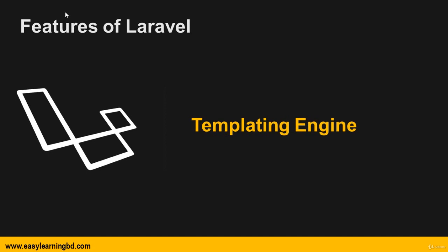Template engine: Laravel comes with a built-in template engine known as the Blade template engine. Blade combines one or more templates with the data model to produce resulting views by transferring templates into cached PHP code for improved performance. Then testing: Laravel by default provides unit testing for the application, which itself contains tests that detect and prevent regression in the framework. Integration of PHPUnit testing framework is very easy in a Laravel application.